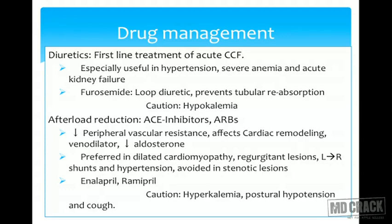ACE inhibitors are preferred in dilated cardiomyopathy, regurgitant lesions, left-to-right shunts, and hypertension. They have additional benefit on the heart musculature by preventing fibrosis and altering remodeling, making them cardioprotective drugs. These drugs often cause hyperkalemia, so they are best given in combination with diuretics. Postural hypotension is the commonest side effect.